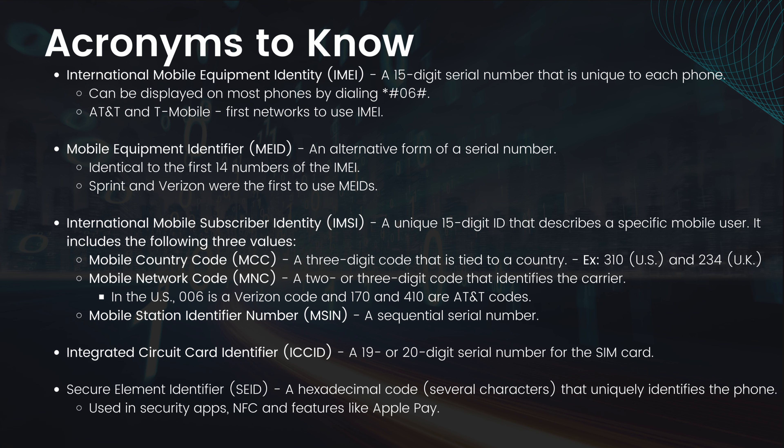The IMSI includes three values: mobile country code, mobile network code, and the mobile station identifier number. The MCC is a three-digit code tied to a country — for example 310 for the US and 234 for the UK. The MNC is a two or three-digit code identifying the carrier — in the US, 006 for Verizon and 170 or 410 for AT&T. The MSIN is a sequential serial number. ICCID is an 18 or 19-digit serial number for the SIM card. SEID, Secure Element Identifier, is a hexadecimal code that uniquely identifies the phone and is used in security apps, NFC, and features like Apple Pay.